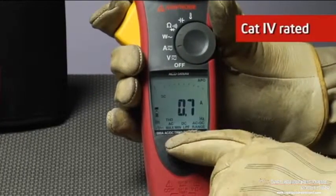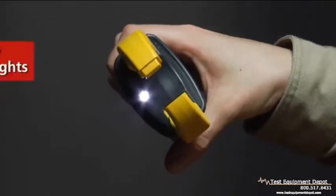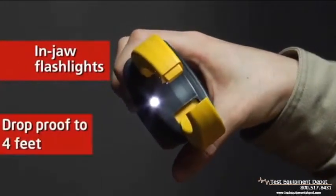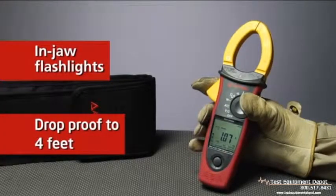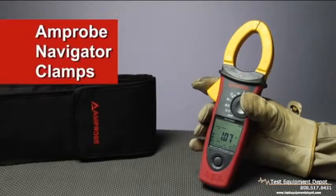The rugged Cat4 rated units are also equipped with in-jaw flashlights and are drop-proof to four feet. Everything you need to take control of your commercial and industrial environments.